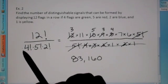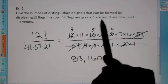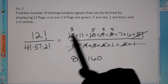But since four are green, we have to divide by those, that many factorial. Five are red. Two are blue. One is yellow.